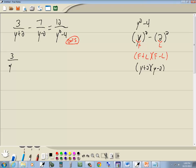So this becomes 3 over y plus 2 minus 7 over y minus 2 is equal to 12 over y plus 2, y minus 2.